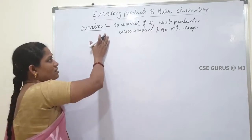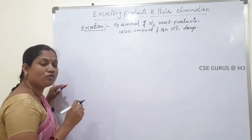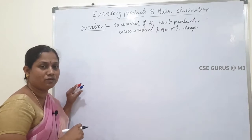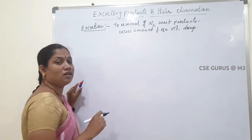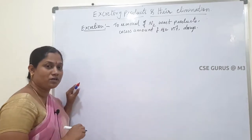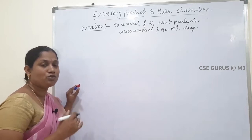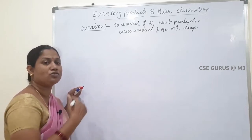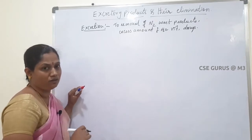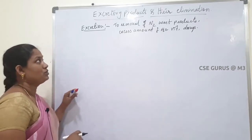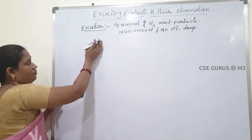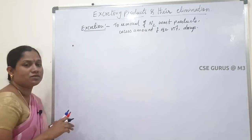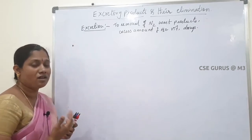Mainly, excretion means the removal of nitrogenous waste products from the body. These nitrogenous waste products are very dangerous to our body — they are toxic substances, so they need to be removed from the body. That process is called excretion.